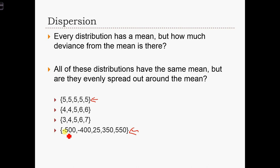The range goes from minus 500 to 550. And in general, there's a big difference between each of these data values and the mean of 5.